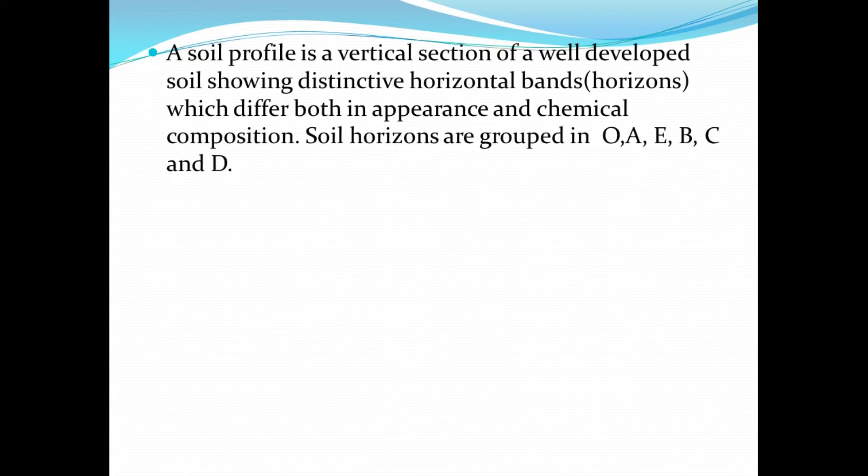First of all, let's define what a soil profile is. A soil profile is a vertical section of a well-developed soil showing distinctive horizontal bands, also called horizons, which differ both in appearance and chemical composition.